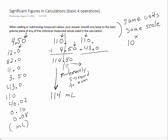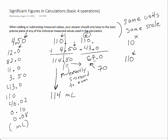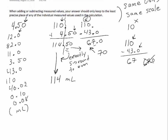If we do 110 minus 43.0, and 110 is only precise to the tens place, then our answer should also only keep to the tens place. While you might normally say 67.0, we must keep to the tens place — we get rid of the 7 and round the 6 up to 70. That's the difference between 110 and 43 milliliters. If instead 110 were precise to the ones place — because we knew how the measurement was made — minus 43.0, now we could keep to the ones place and say 67.0. Adding and subtracting always keeps to the least precise place.